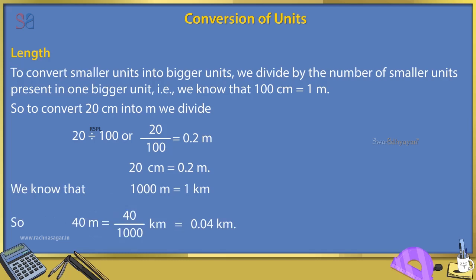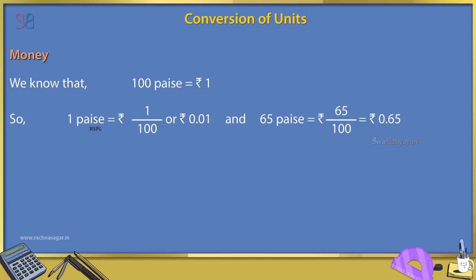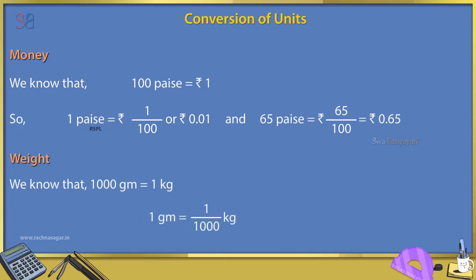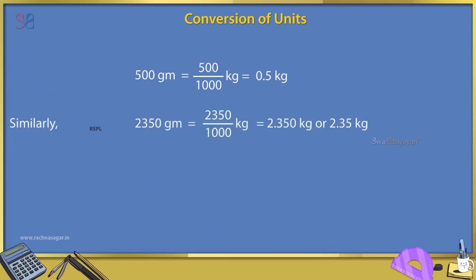Money: We know 100 paise = 1 rupee. So 1 paise = Rs. 1/100 = Rs. 0.01, and 65 paise = Rs. 65/100 = Rs. 0.65. Weight: We know 1000 gram = 1 kg. So 1 gram = 1/1000 kg. 500 gram = 500/1000 kg = 0.5 kg. Similarly, 2350 gram = 2350/1000 kg = 2.350 kg = 2.35 kg.